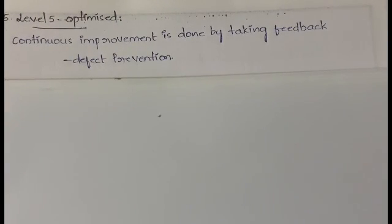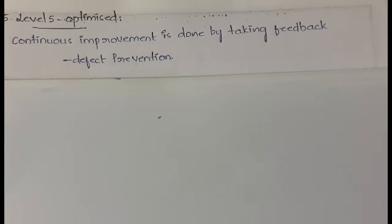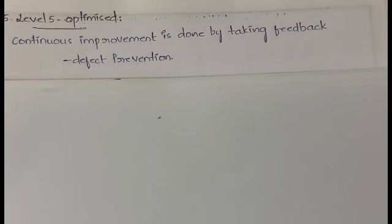Level 5 is Optimized. As the word itself says, it makes the business more profitable and more reachable to customers. Here, continuous improvement is done by taking feedback from customers, employees, and stakeholders. Defect prevention is also done — any errors or problems can be prevented using this optimized phase. Most MNCs come under this level.